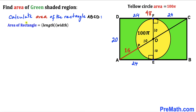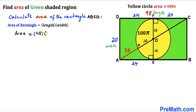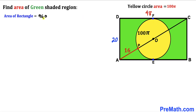Let's calculate the area of rectangle ABCD. Recalling the formula, area equals length times width. Our length is 48 and our width is 20, so the area of the rectangle equals 48 times 20, which gives us 960 square units.